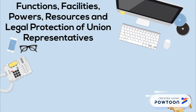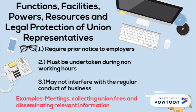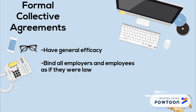Employees and unions may engage in various union activities in the workplace after three requirements are met: prior notice to the employer must be given, it must be undertaken during non-working hours, and it may not interfere with the regular conduct of business. Formal collective agreements must take place in accordance with the law. These agreements have general efficacy and bind all employers and employees as if they were the law.